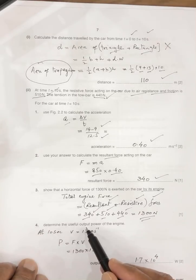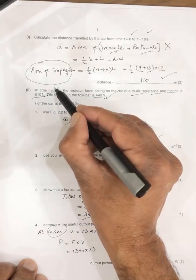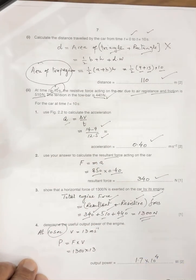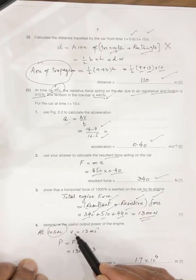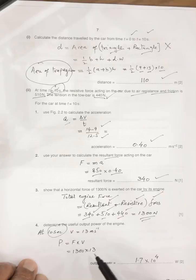Next, determine the useful output power at 10 second, because this is question for the 10 second time. So at 10 second from the graph, V is equal to 13 meter per second, so power force into speed, so 1,300 into 13, so answer is 1.7 into 10 power 4 watts.